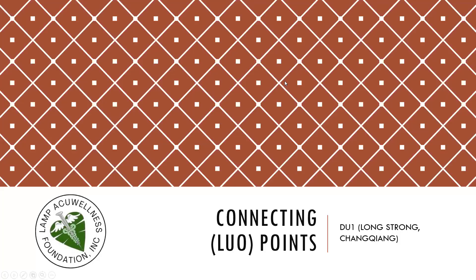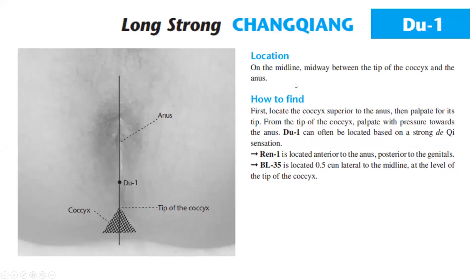We continue with the luo connecting points. DU1, Changqiang, Long Strong. Location: on the midline, midway between the tip of the coccyx and the anus. How to find it? First locate the coccyx superior to the anus, then palpate for its tip. The tip of the coccyx is palpated with pressure towards the anus. DU1 can often be located based on a strong de qi sensation.